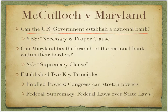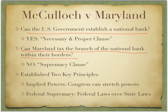The second question was: can Maryland tax the branch of the National Bank within their borders? The answer was a resounding no. There's a key clause now known as the Supremacy Clause — Article 6, Section 2 — which says that if a state law and a federal law conflict, the federal law supersedes the state law. The federal law is the supreme law of the land. The famous quote is that with the power to tax comes the power to destroy, and a state government cannot destroy a federal institution.